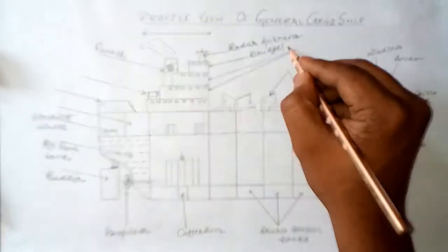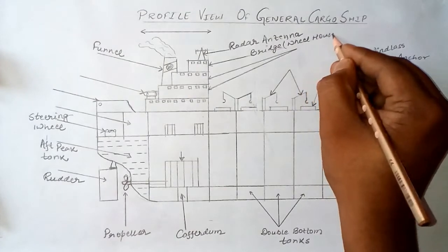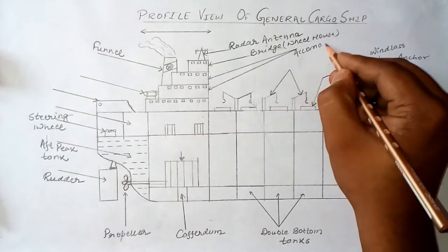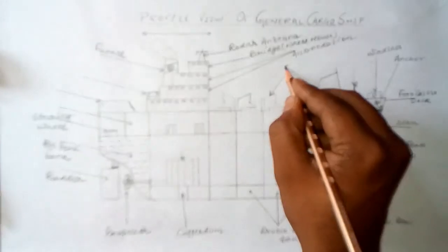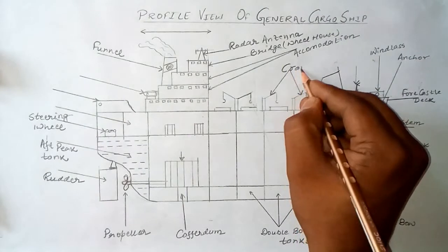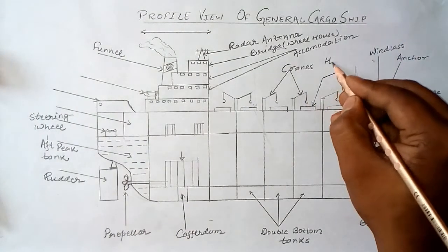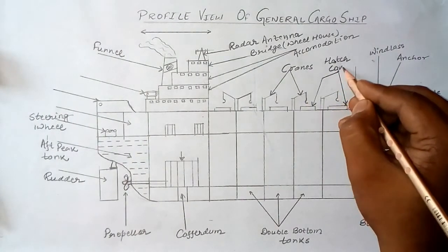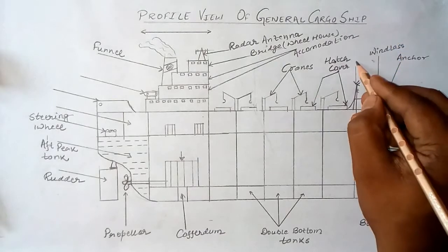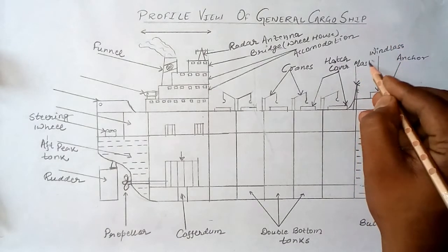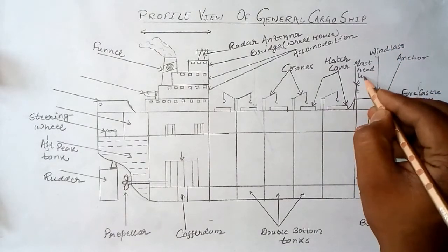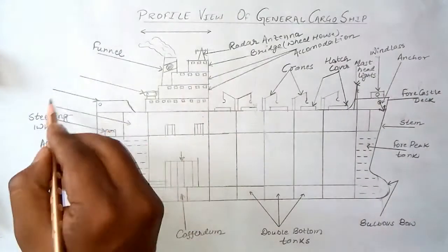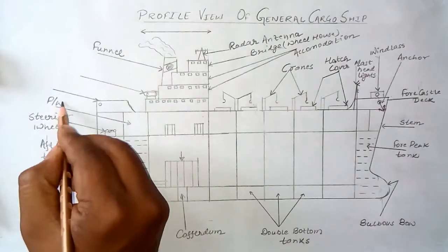Further labels include: the cleaner, the bridge or navigational wheelhouse, the accommodation, the cranes, the hatch covers, and the masthead lights or anchor light.